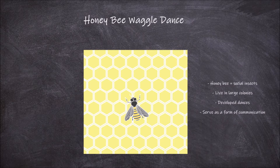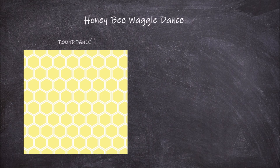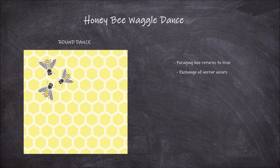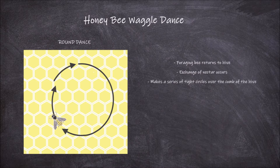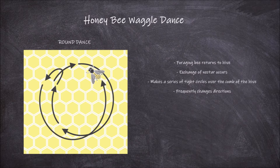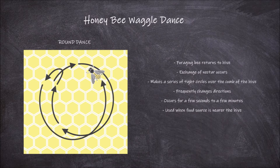There are three different dances a honeybee may engage in that all communicate different information. The first type of dance is known as the round dance. During this kind of dance the foraging bee returns to the hive and an exchange of nectar occurs. They then make a series of tight circles over the comb of the hive, frequently changing directions. This goes on for a few seconds up to a few minutes. This dance is used when the food source is nearer to the hive.